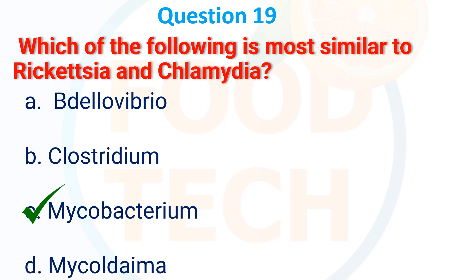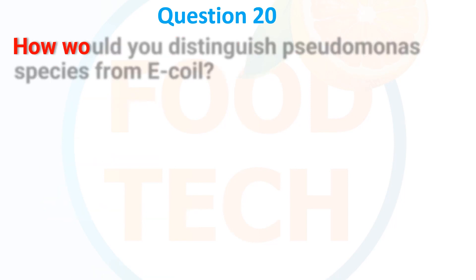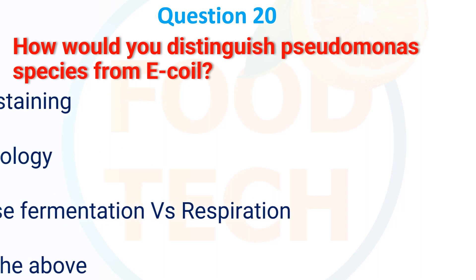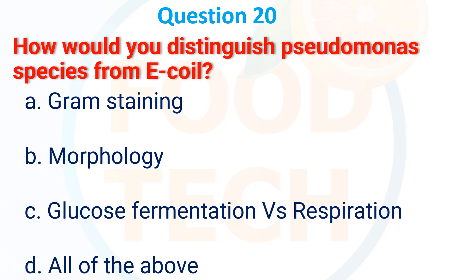How would you distinguish Pseudomonas species from E. coli? A. Gram staining, B. Morphology, C. Glucose fermentation vs. respiration, D. All of the above. The answer is C: Glucose fermentation vs. respiration.